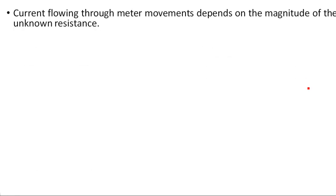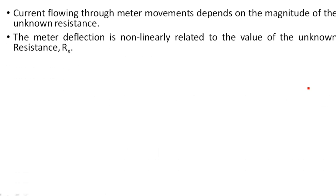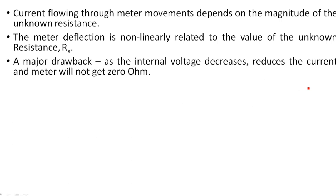The current flowing through the meter movement depends on the magnitude of the unknown resistor. The meter deflection is non-linearly related to the value of unknown resistor Rx. A major drawback is that as the internal battery voltage decreases over time, it reduces the current and the meter will not reach 0 ohms. This is why R2 is taken as a potentiometer rather than a fixed value — if it were fixed, this problem would persist.